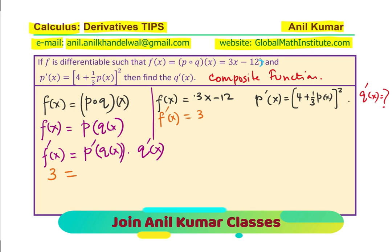And we are given that the derivative of p is 4 + (1/3)p(x)². You get the idea. We got this which is given to us, and we are going to multiply this with the derivative of q.